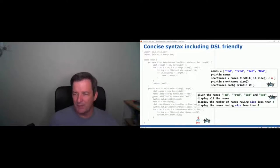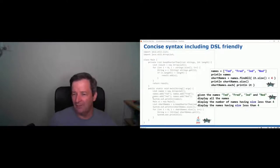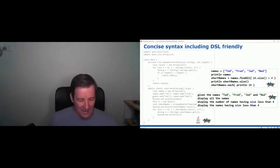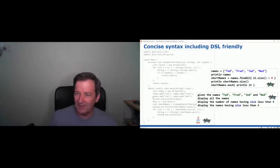Groovy also has support for domain-specific languages. It's got a feature called command chains and a few other bells and whistles that make it easy to write code that doesn't even look like code — it looks like a text file with string sentences. That is actually code, and it can be statically typed code. It can actually be code that won't compile if a spell checker finds that any words don't pass — that's a statically typed feature that would be hidden behind the scenes and can do those kinds of checks if you want.